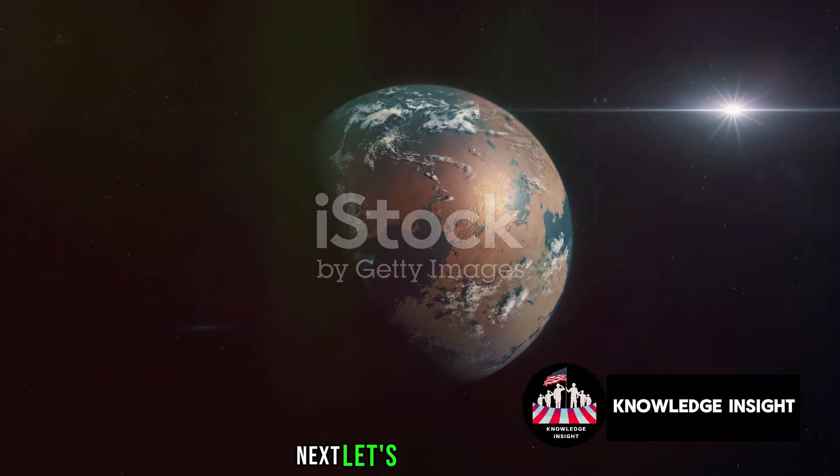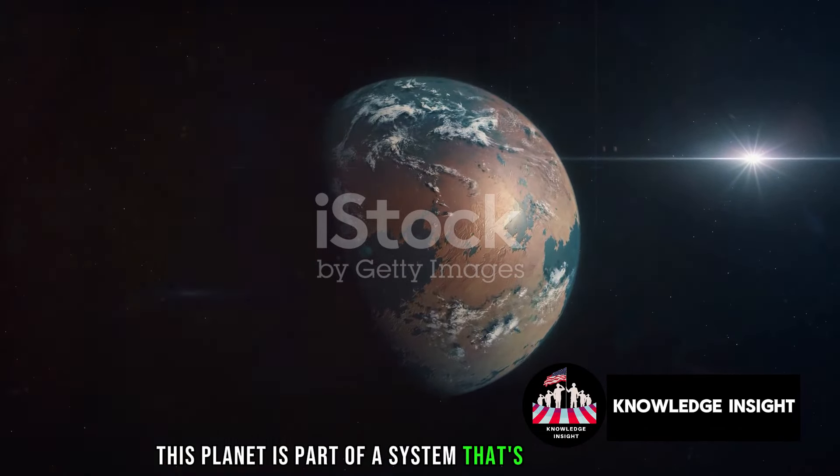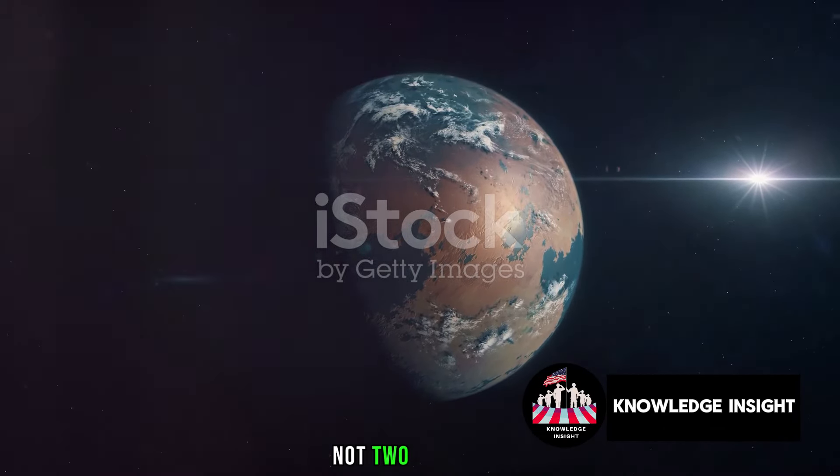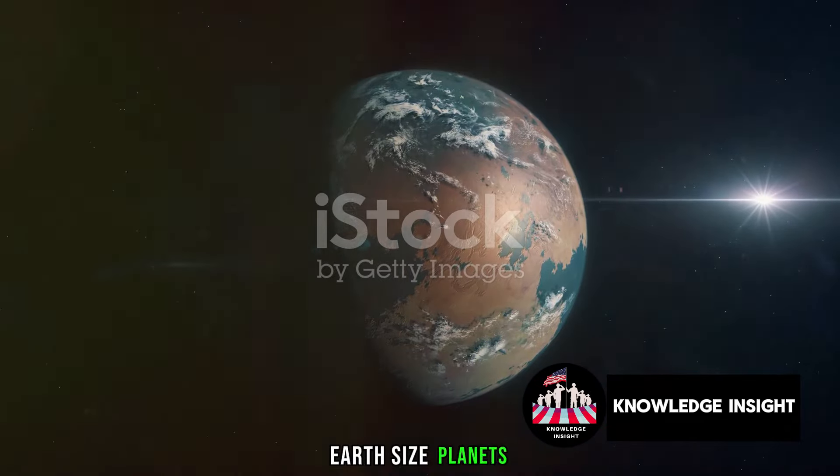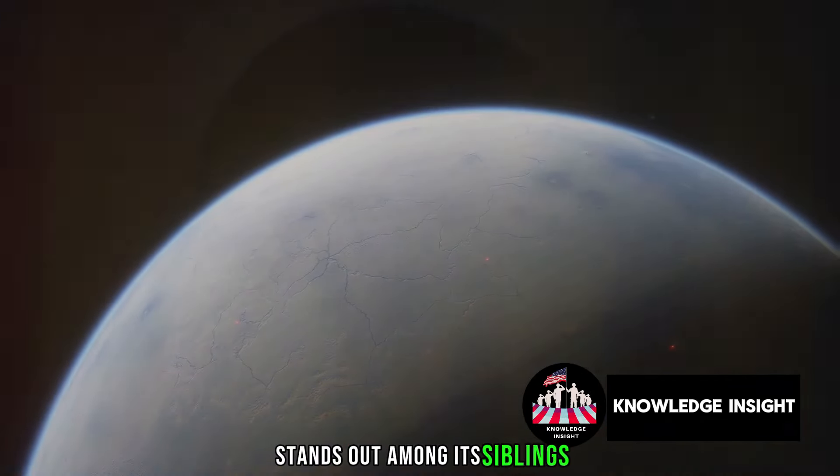Next, let's jet off to number 3, Trappist-1e. This planet is part of a system that's home to not one, not two, but seven Earth-sized planets. Trappist-1e, however, stands out among its siblings.